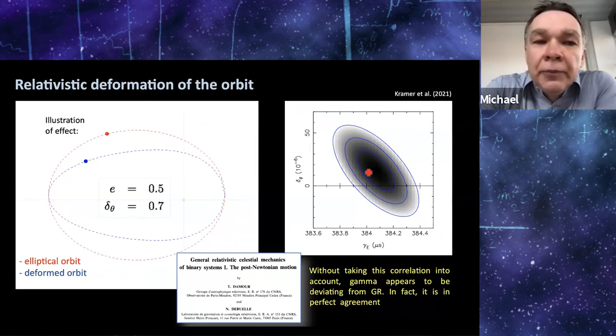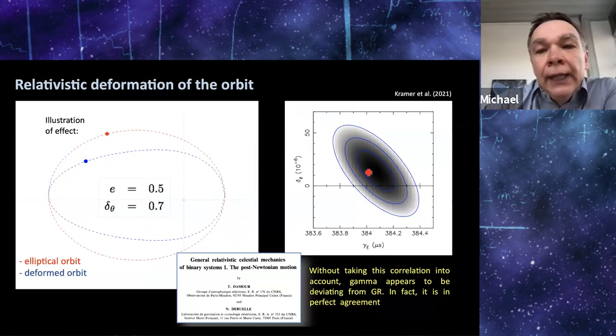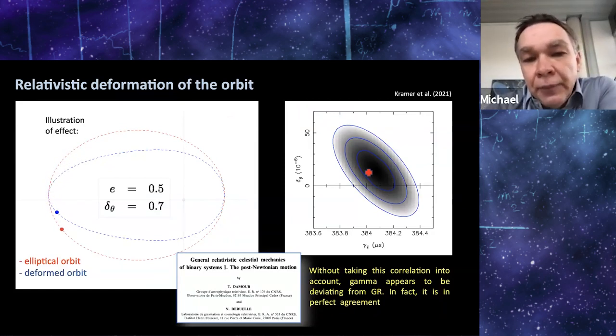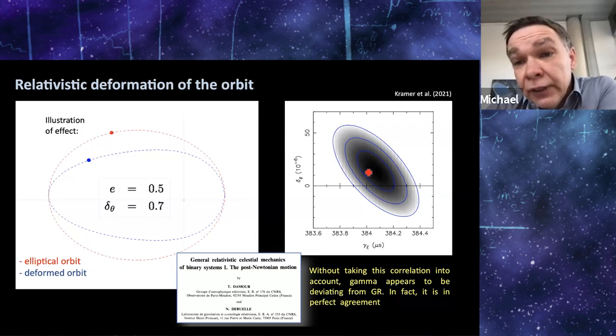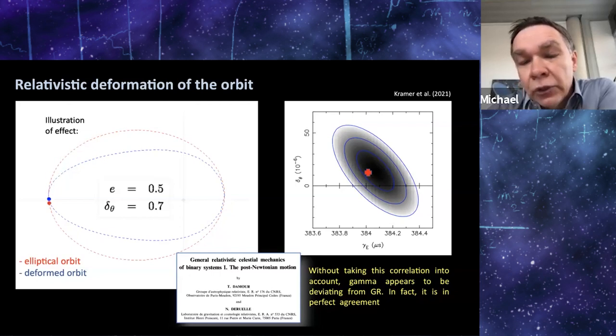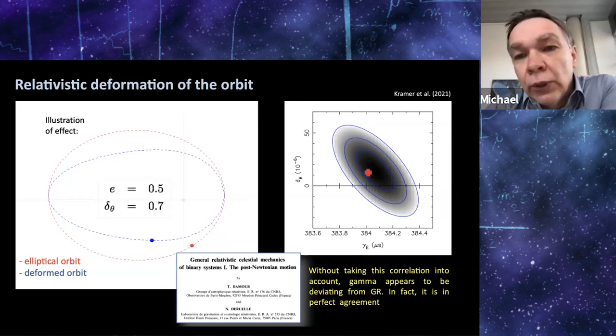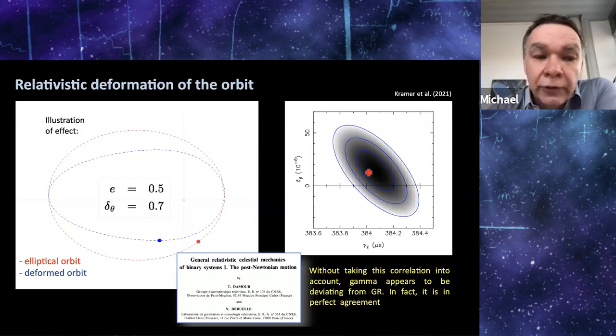We also have measured that the orbit is relativistically deformed. That is because we have actually three eccentricities when you write down the equations of motion. And here is a very much exaggerated effect of how that impacts on the orbit. And even though this effect is not measured with high significance, it's actually important to include this in our timing model. Because otherwise, we would have obtained a wrong parameter of the Einstein delay, and would have been offset from GR by about two sigma. But by taking the orbital deformation into account as it was first put forward in the 1985 paper, we can actually show that is very much consistent with the prediction of general relativity.